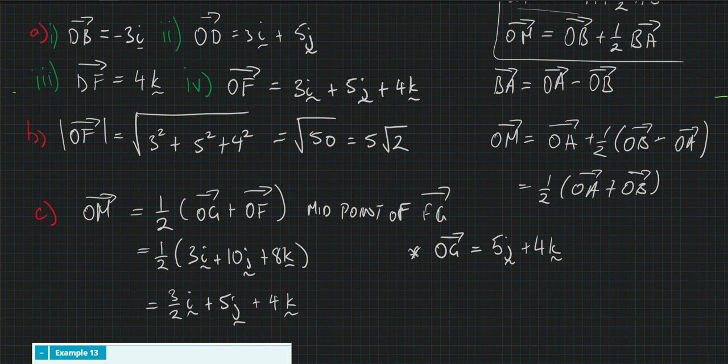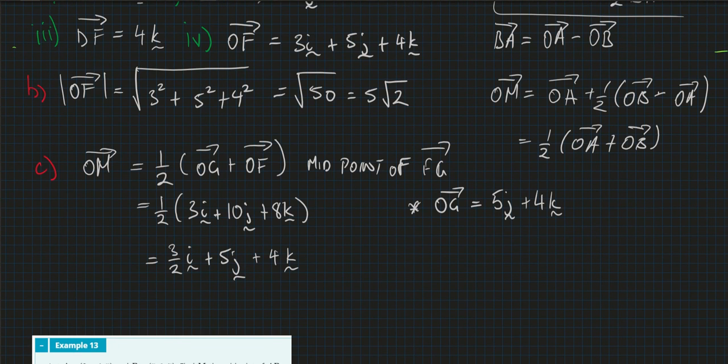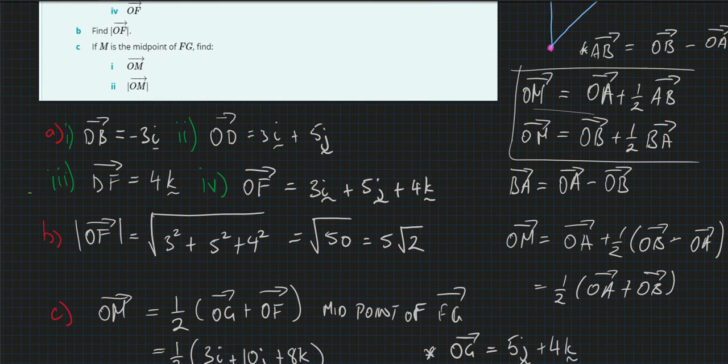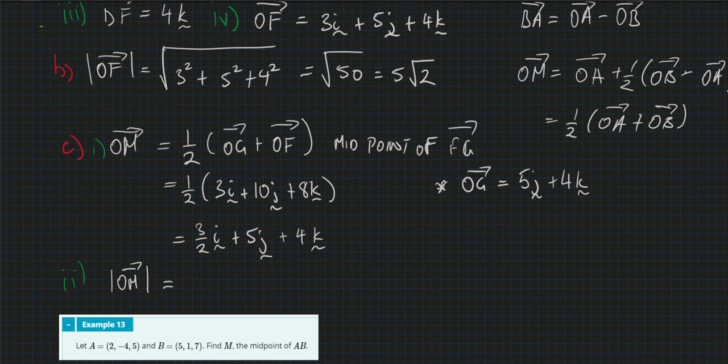3 on 2i plus 5j plus 4k. And I think they also want us to get the magnitude. So part D is the magnitude of O to M, which equals square root of 3 on 2 squared plus 5 squared plus 4 squared equals 16 plus 25 is 41.